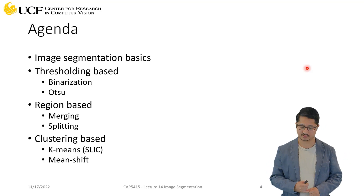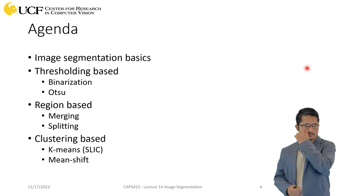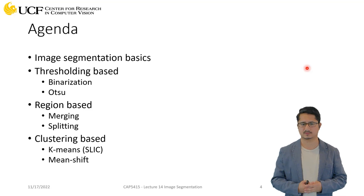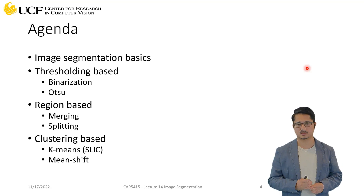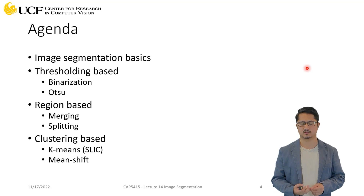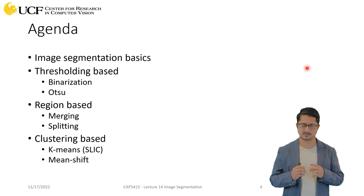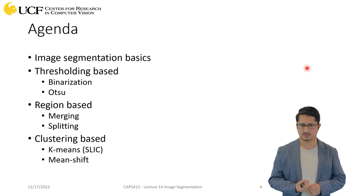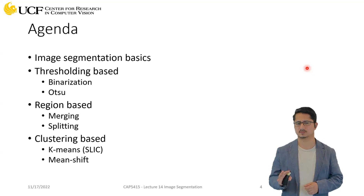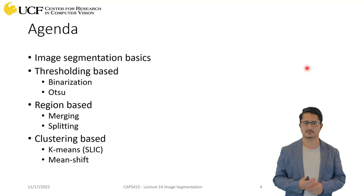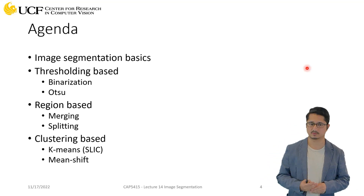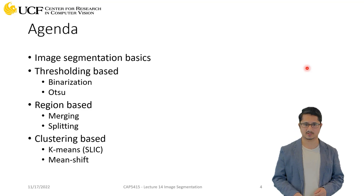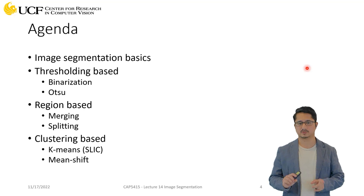This is the agenda for this lecture — we have a lot of topics to cover. We'll start with some basics and then move to a very simple way of doing segmentation using thresholding, which will be like binary segmentation. Then we'll extend to more advanced algorithms such as region-based algorithms covering merging and splitting, and then a clustering-based approach with two different flavors: K-means and mean shift, which you may have studied in your machine learning course.